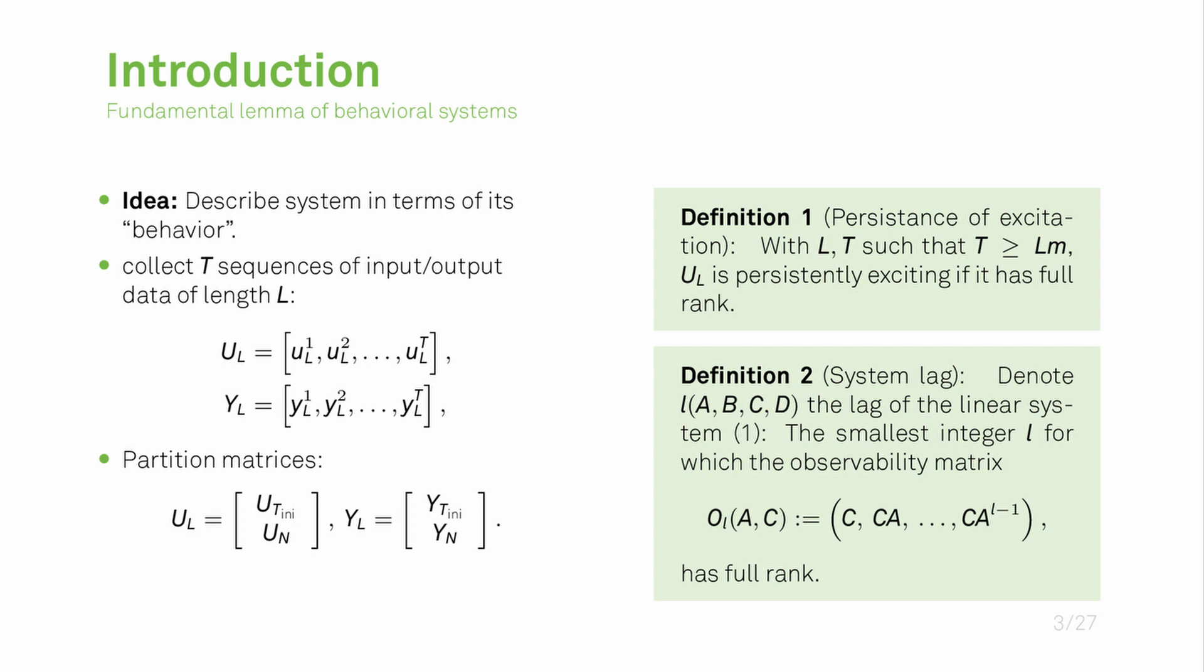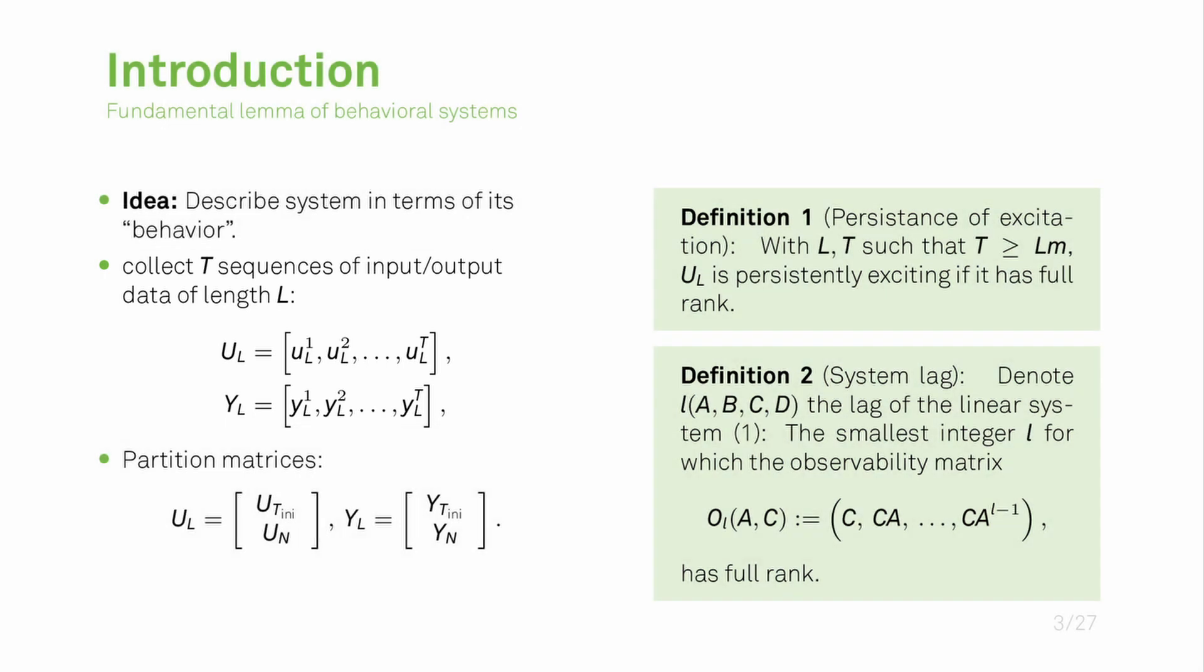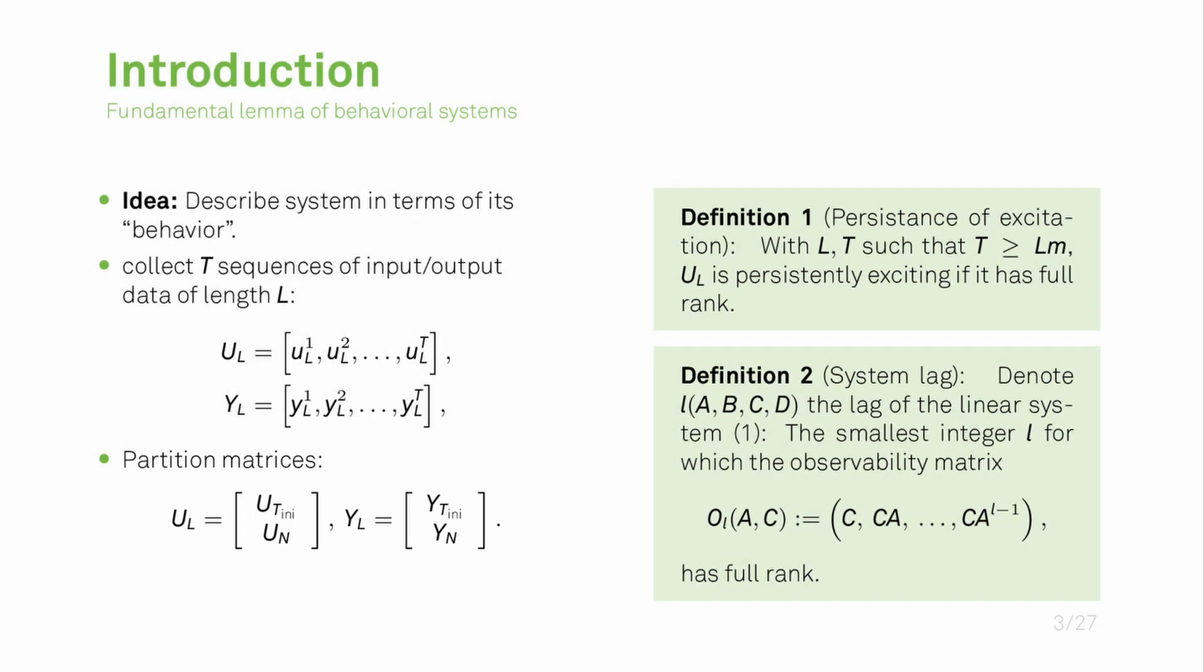An alternative approach to describe the dynamic system is based on the fundamental lemma of behavioral systems for which I want to introduce the prerequisites on this slide. The idea of this lemma is to describe a system in terms of its behavior. For this we need to collect T sequences of input-output data of length L, then partition the created matrices, and we also need to consider two definitions: most importantly the persistence of excitation definition which essentially boils down to UL having full rank, and the system lag which is the smallest integer L for which the observability matrix has full rank.